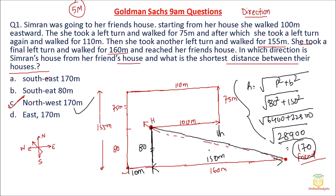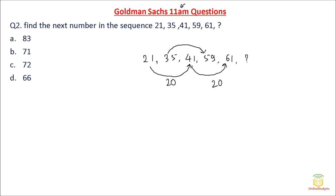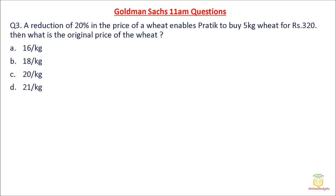Moving to question number 2, which was asked in the 11 AM shift. Find the next number in the sequence: 21, 35, 41, 59, 61... There are two interleaved series here. One series: 21, 41, 61 — adding 20 each time. The other series: 35, 59 — differences are 24. Applying the pattern: 9 minus 5 is 4, 5 minus 3 is 2, giving a difference of 24. Adding: 7 plus 1 is 8, so 83 is the correct answer.